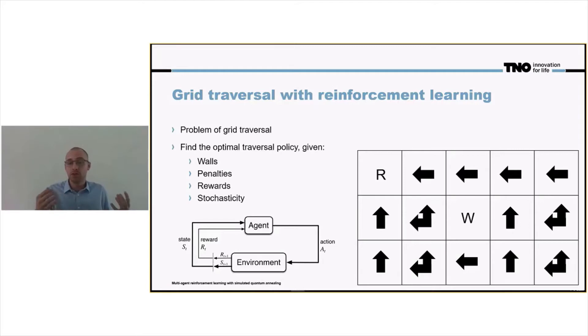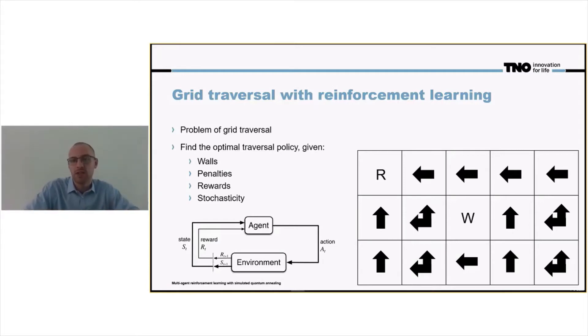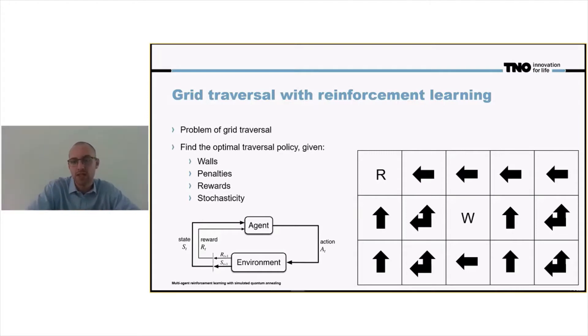And if you train a model, you will, in the best case, find this policy. This is the optimal policy given the grid we just had.